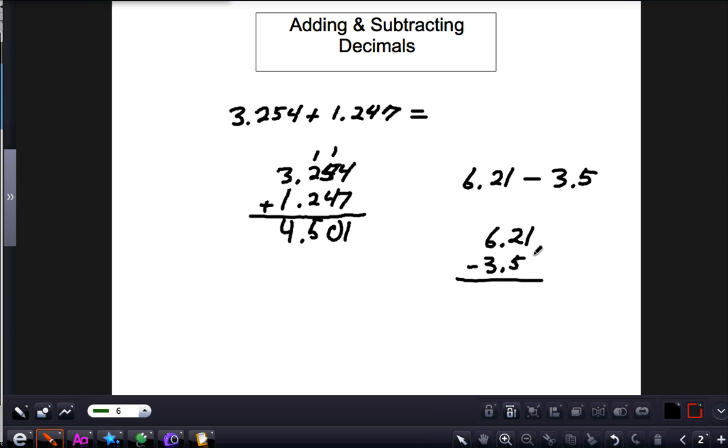zero so we have hundredths lined up with hundredths, tenths with tenths, and so on. Again, decimal points lined up and the decimal places.